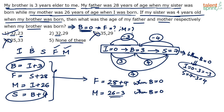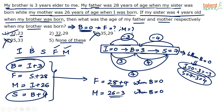When b = 0, s = 4. So father's age = 4 + 28 = 32. When b = 0, i = −3. So mother's age = −3 + 26 = 23. The answer is 32 and 23.